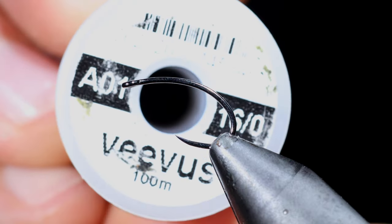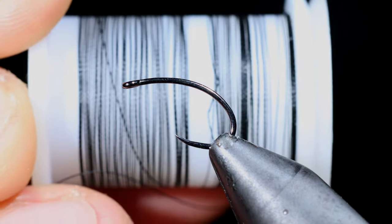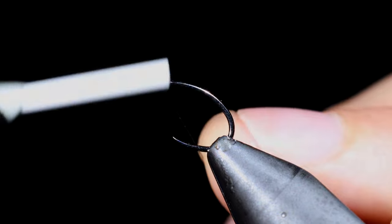Today we're going to be tying a white maggot. We'll start off with some Vivas thread. Here I'm using black.